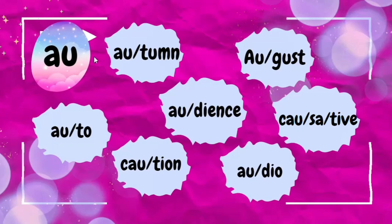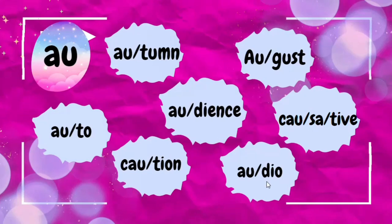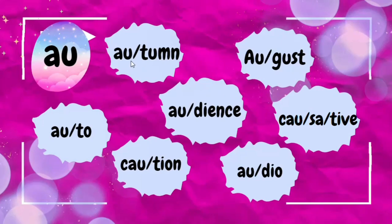For example: autumn, August, auto, audience, causative, caution, and audio. In all these words, you can see that AU is at the end of a syllable — that is the open syllable position — and it is either at the beginning or in the middle of the word.